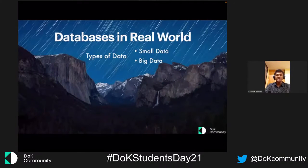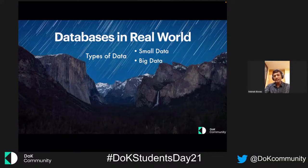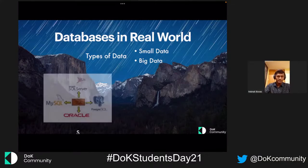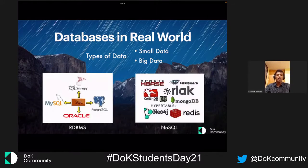Let's talk about databases in real life. The types of data can be broadly categorized as small data and big data. Small data is general data we use on a day-to-day basis, but big data is something we've been observing for the past few years. For example, Amazon tracks every single click you do on their website and uses that to find recommendations based on your search history. Multiply that by millions of users and you get petabytes and exabytes of data — that is essentially big data. To handle small data we use RDBMS, but to handle big data we have NoSQL or non-relational database models such as Cassandra, MongoDB, and Hypertable.